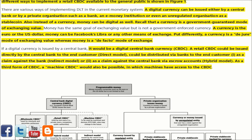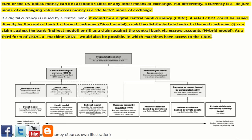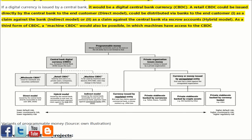Recall that a currency is a government-guaranteed mode of exchanging value, while money has the same goal but is not a government-enforced currency. A currency is the euro or the US dollar; money can be Facebook's Libra or any other means of exchange. Put differently, a currency is a mode of exchanging value whereas money is a mode of exchange. If a digital currency is issued by a central bank, it would be a digital central bank currency — a CBDC. A retail CBDC could be issued directly by the central bank to the end customer.